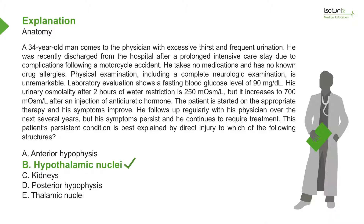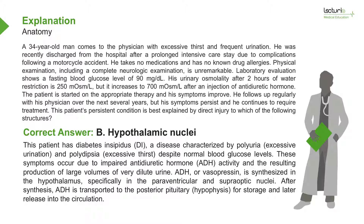The correct answer is B, hypothalamic nuclei. This patient has diabetes insipidus, or DI, a disease characterized by polyuria (excessive urination) and polydipsia (excessive thirst), despite normal blood glucose levels. These symptoms occur due to impaired antidiuretic hormone (ADH) activity and the resulting production of large volumes of very dilute urine.